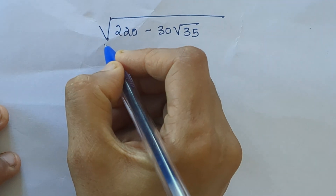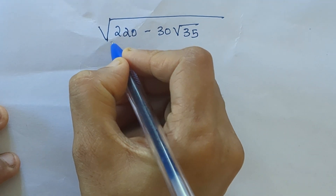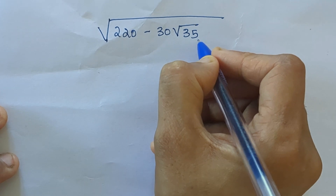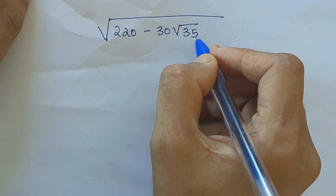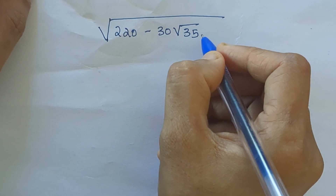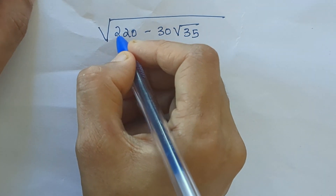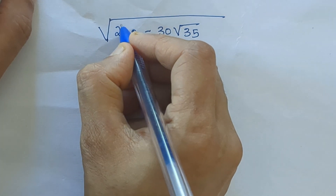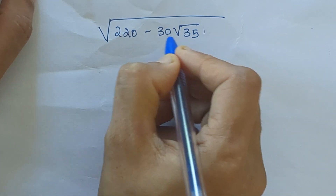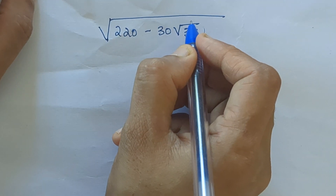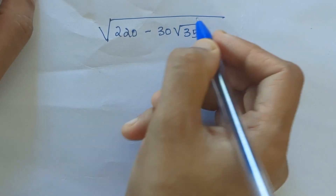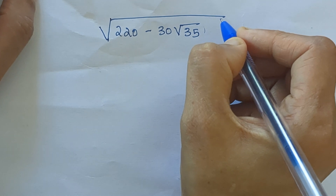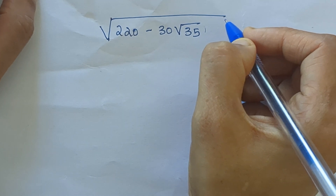Our question is the square root of 220 minus 30 root 35. In order to solve this problem, this is a nested square root problem. We have to convert the numbers inside the square root to a perfect square so that the square and the root get cancelled, making it easy to simplify.